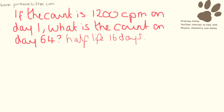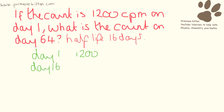Another example now, but the count is given in counts per minute. So 1,200 on day one — if the half-life is 16 days, what is the count on day 64? So on day one we have 1,200. After 16 days, one half-life, day 16 is going to be half of that, so 600.